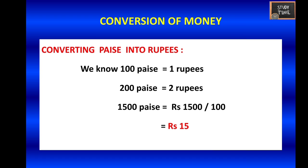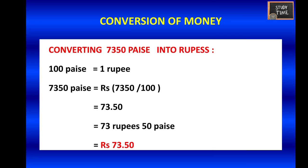Next, to convert paise into rupees, we know 100 paise equals 1 rupee. For the example of 7350 paise, divide by 100: 7350 divided by 100. A simple way to divide by 100 is to see the number of zeros in the divisor.